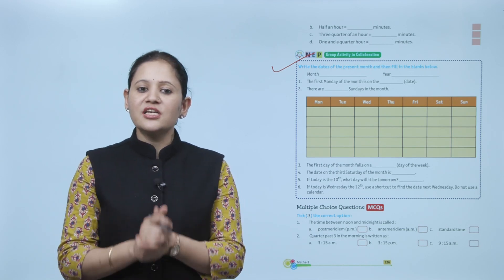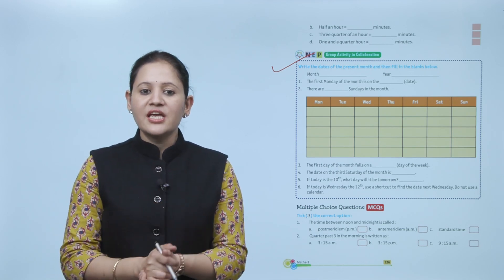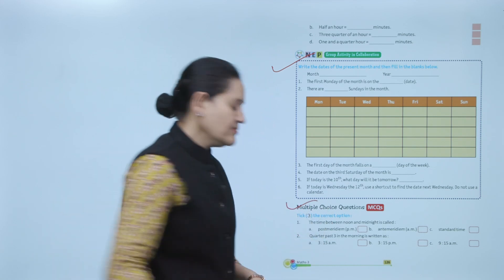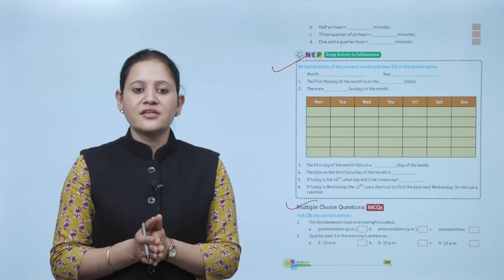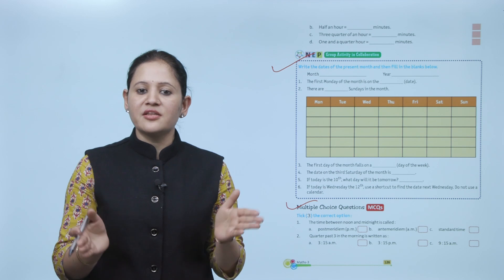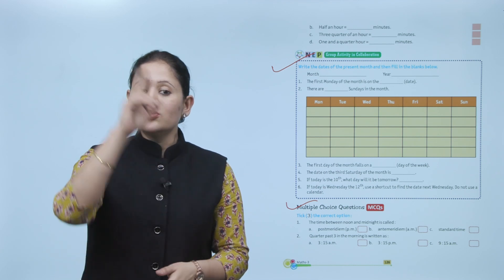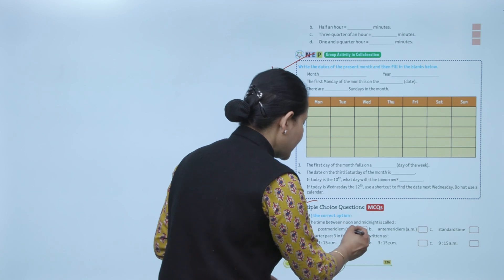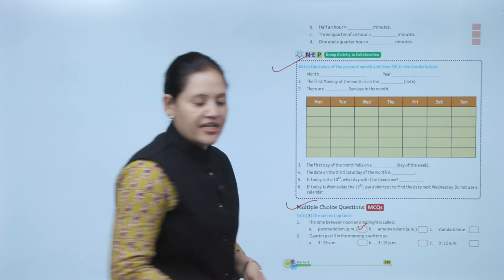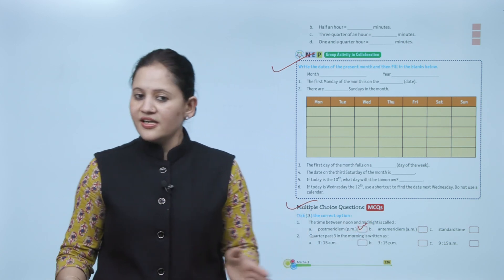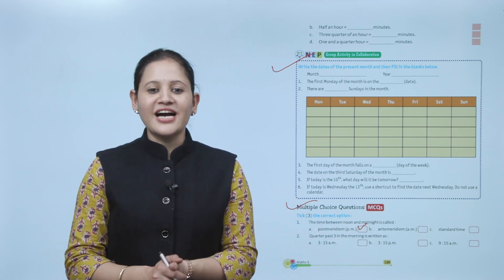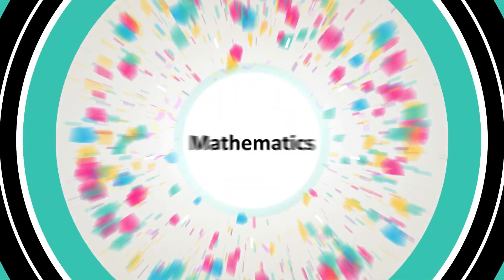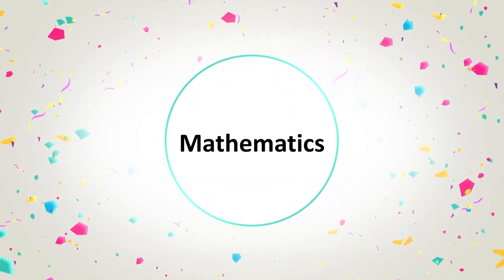Next is Multiple Choice Questions. Choose the correct option: the time between noon and midnight is called PM — post meridian. So option A is the correct answer. Here we end the chapter. I hope you understood it well. Now you need to practice it.